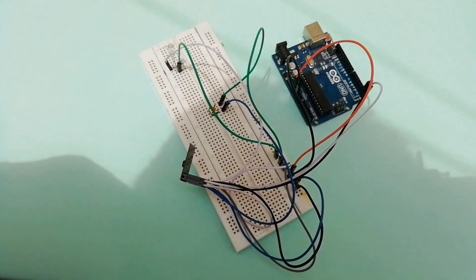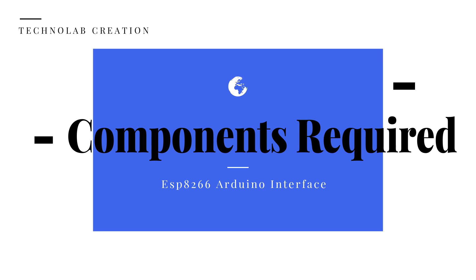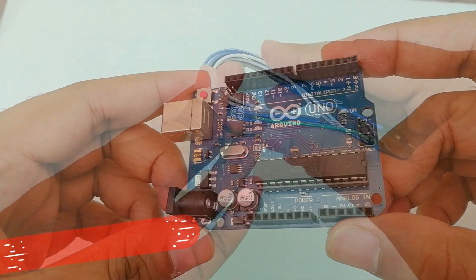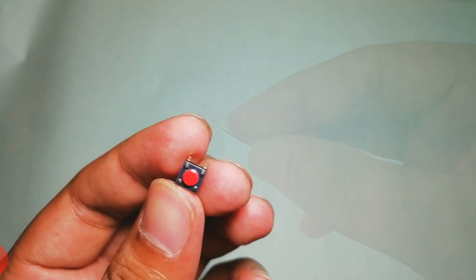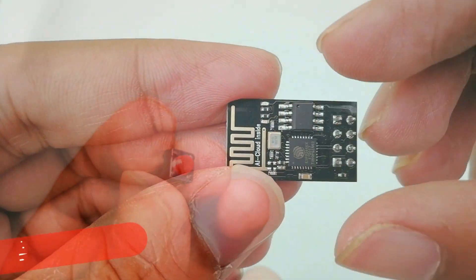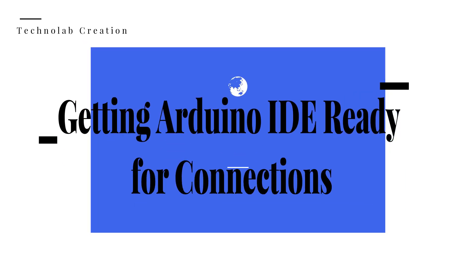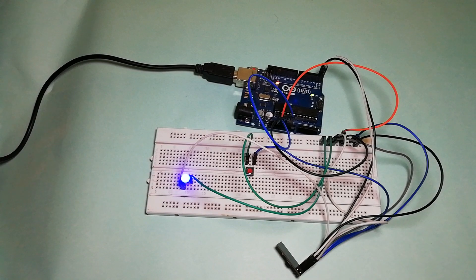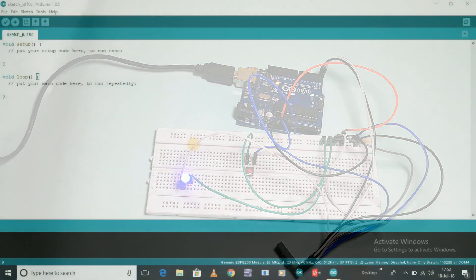For this we need Arduino Uno, some jumper wires, breadboard, one LED, one micro switch, and our ESP8266 ESP-01. ESP8266 Wi-Fi module can be programmed using Arduino IDE, and in order to do that we need to make a few changes to the Arduino IDE.